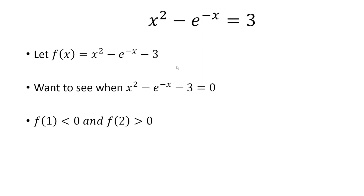So we're going to use the bisection method, which, to start off, we want to pick an x value where y is negative and where y is positive. When x is 1, we get a negative y value. When x is 2, we get a positive y value.